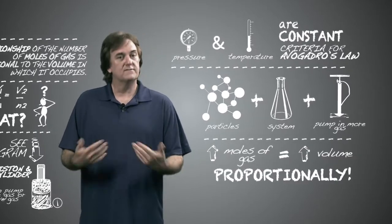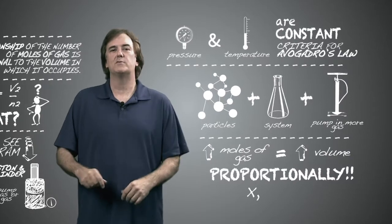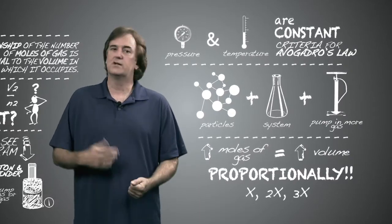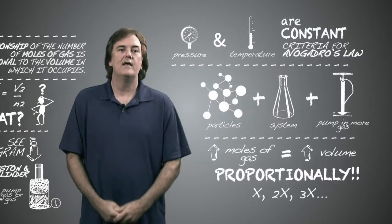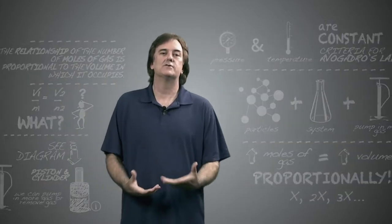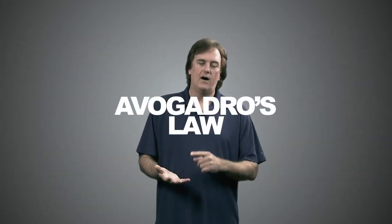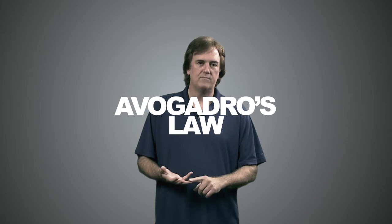It's very simple: whatever your volume is with one mole, your volume will be double that with two moles, and triple that with three moles. That is Avogadro's law — the direct proportionality of volume and number of moles.